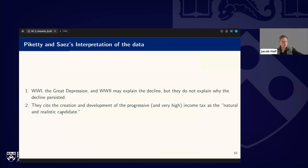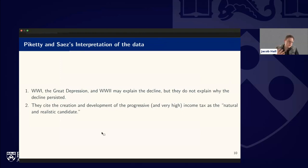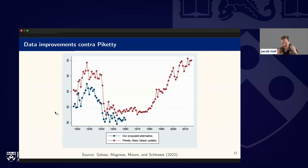Piketty's preferred interpretation is that World War One, the Great Depression, and World War Two may explain the decline, but don't really explain why that decline persisted. There were big shocks, but if nothing structural changed in the economy we'd expect inequality to rise back to pre-war levels. Their preferred explanation is the creation and development of progressive, very high top-bracket income taxes for the wealthiest.